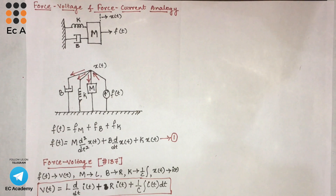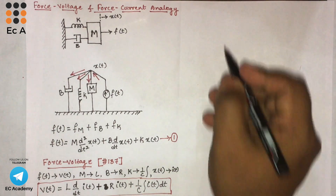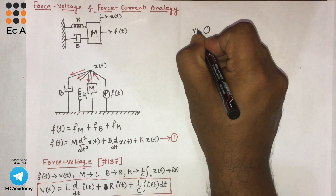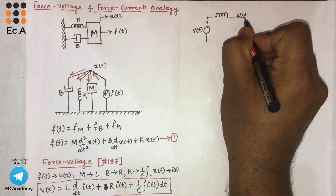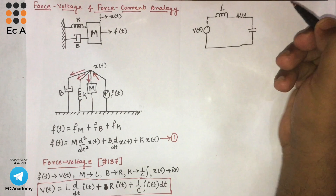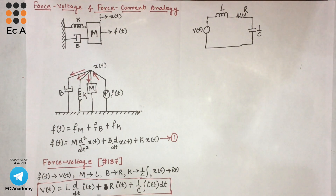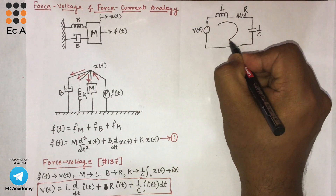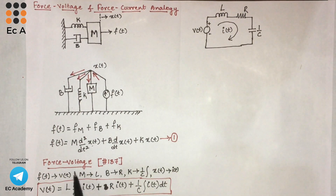Using this equation, let us write the electrical circuit. You can see v of t is the input, and for different electrical elements — inductor, resistor, and capacitor — the current is the same. That is why we can say all these elements are connected in series. So the input is v of t, and L, R, and C are connected in series. The current flowing through this electrical circuit is i of t. This is the electrical analogous circuit based on force voltage analogy.